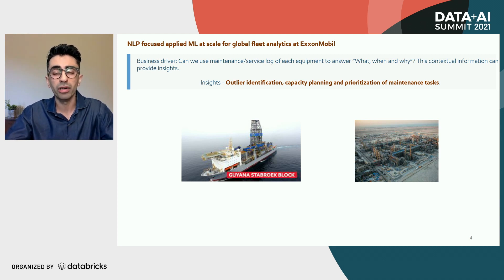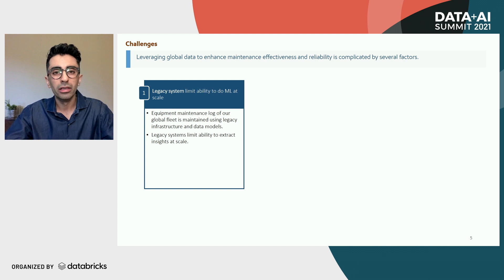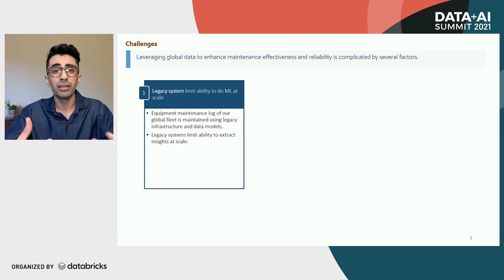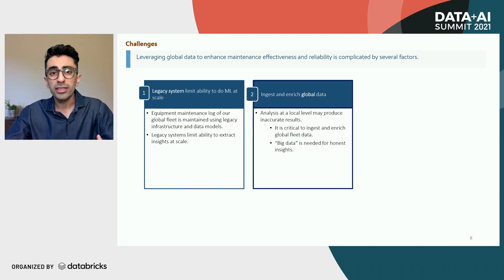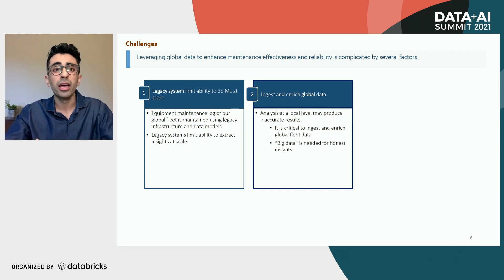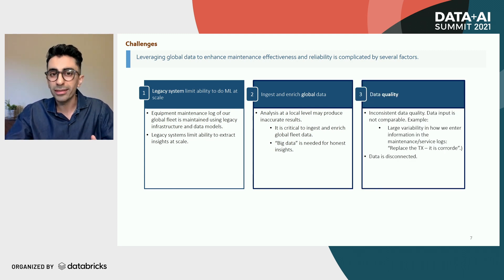Before I talk about the architecture, let me take a minute to discuss the challenges we faced while developing this product. I classify those challenges into three broad categories. First is infrastructure — we have legacy systems and infrastructure where we store our data, so we had to be cognizant that our data sits in our legacy system. Second, as we were scaling up our prototype and putting machine learning models into production, we had to carefully think through how we can scale our models to operate at ExxonMobil scale. Third is data quality, which feeds directly into the complexity of our NLP algorithms.